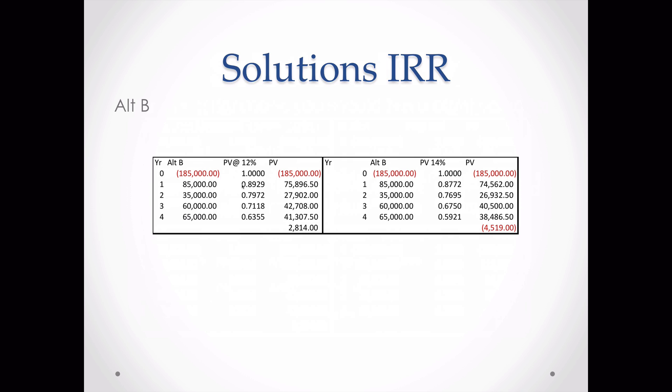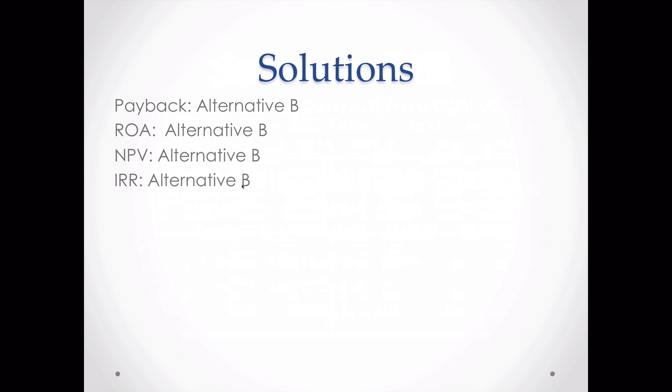For Alternative B's IRR, we know it's above 12% since NPV was positive at 12%. I tested 14% and got negative $4,519 — too high. Looking at those numbers, it's going to be about 13%, so the IRR for Alternative B is approximately 13%. Since we want the highest IRR, we choose Alternative B. All four evaluation methods give us the same answer: Alternative B. Note that NPV and IRR will always choose the same alternative since they're essentially the same type of calculation.